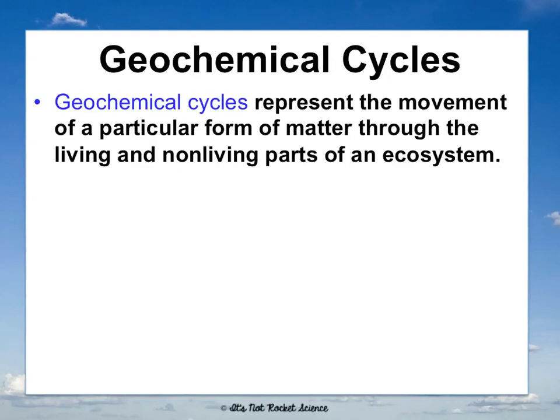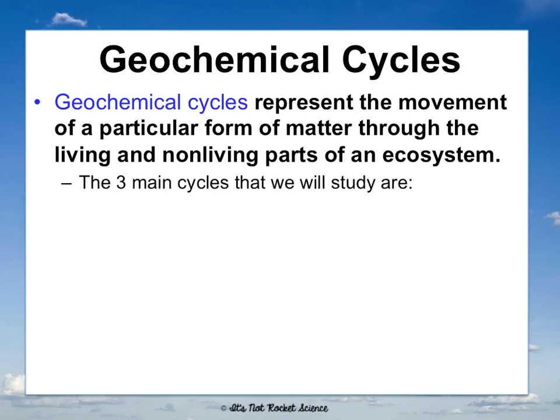Geochemical cycles represent the movement of matter, or of a particular form of matter, through the living and non-living parts of an ecosystem. Community is all the living things in a defined area; ecosystem is all the living and non-living parts. We're going to look at three main cycles: the water cycle (also known as the hydrologic cycle), the carbon cycle, and the nitrogen cycle.